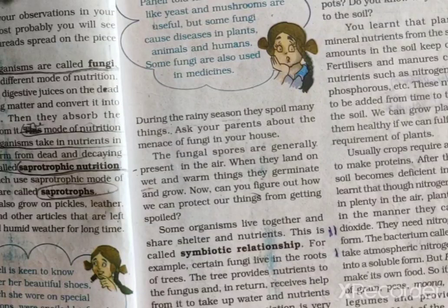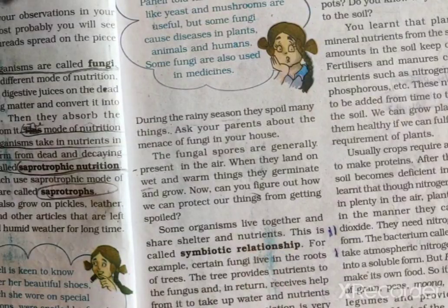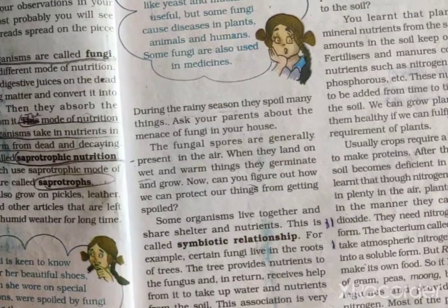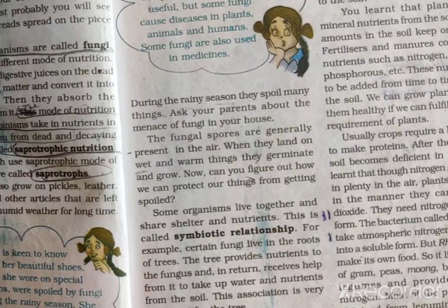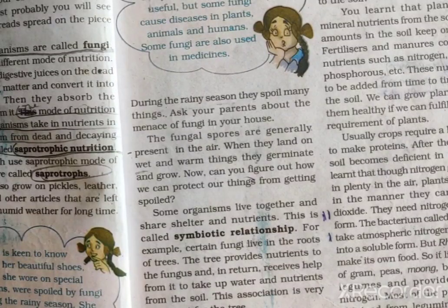During the rainy season, fungi spoil many things. Fungal spores are generally present in the air. When these spores land on wet and warm things, they germinate and grow.